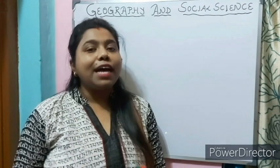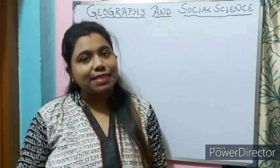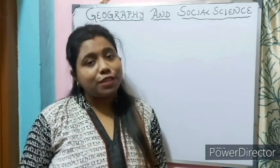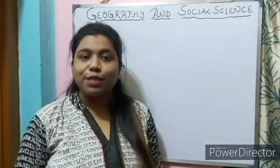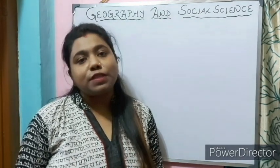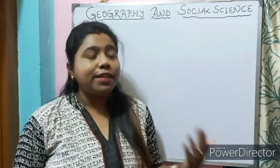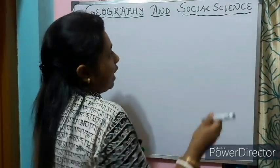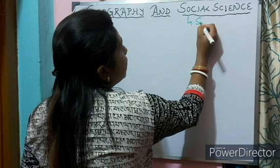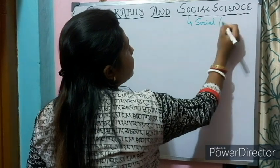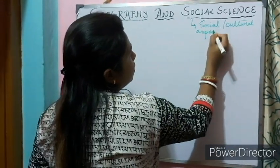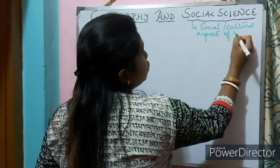Hello Class 11. In the last two videos we tried to understand what is geography, why do we need to study geography, geography as a study of aerial differentiation, geography as an integrating discipline, and the relationship between physical and natural science. Now let us move ahead with the new topic: geography and social science. When we talk about social science, we need to understand the social and cultural aspects of human beings or human society.